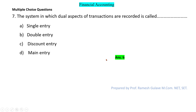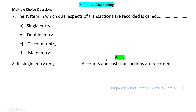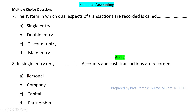The next question says: in single entry, only blank accounts and cash transactions are recorded. In single entry, only personal accounts and cash transactions are recorded. So option A is the right answer.